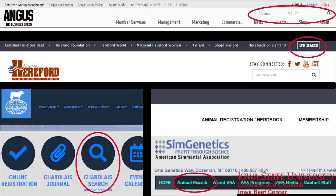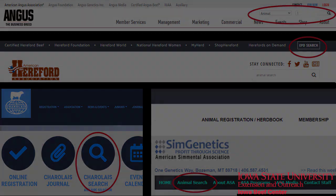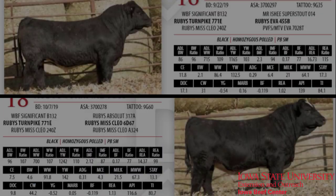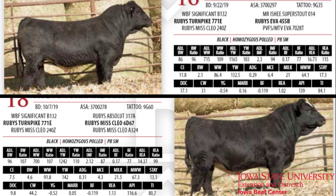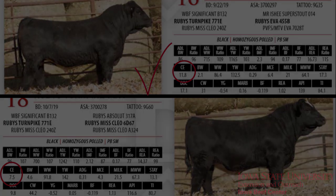Some CED EPDs are comparable across breeds, but not all. If you're looking for a general rule of thumb, it's safe to keep calving ease EPDs in the double digits, meaning plus 10 or higher.